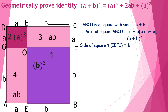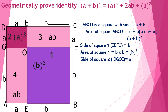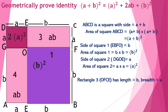Consider Square 1, labeled EBFO, which has each side equal to b. So the area of Square 1 is b × b = b². Next, Square 2, labeled DGOE, has each side equal to a, so the area of Square 2 is a × a = a². Rectangle 3, labeled OFCE, has length equal to b and breadth equal to a, so its area is ab.